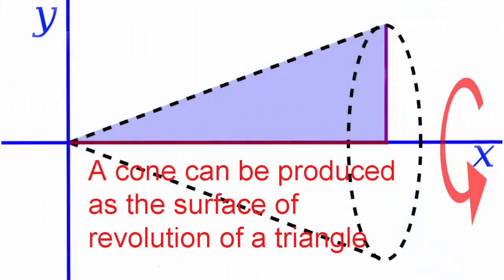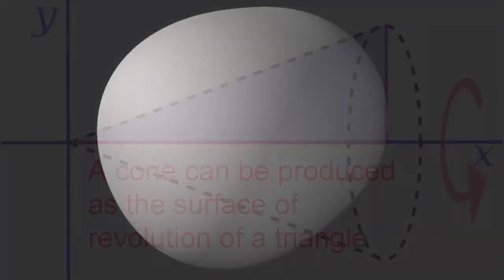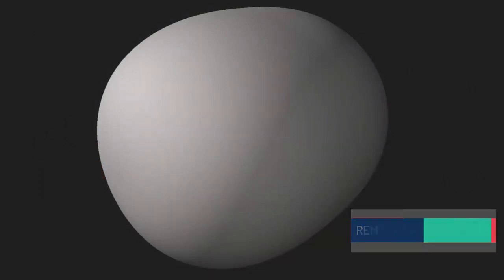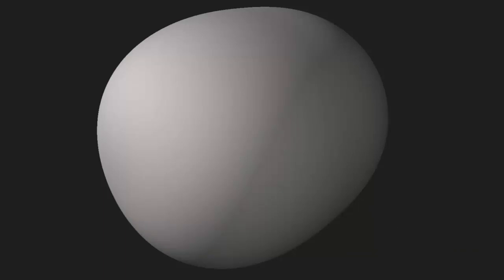A surface of revolution is a three-dimensional shape obtained by spinning a 2D shape about an axis. For instance, a sphere is the surface of revolution you get by spinning a circle around its diameter. Of all surfaces of revolution, none is more surprising than the super egg, which was named and popularized by Danish poet and scientist Pete Hyen. A super egg comes from the rotation of a certain kind of super ellipse, a shape that's midway between an ordinary ellipse and a rounded rectangle.